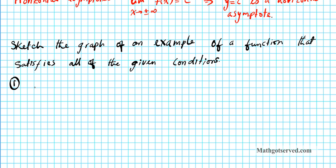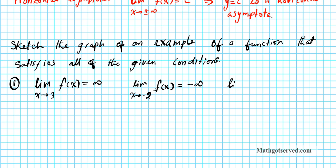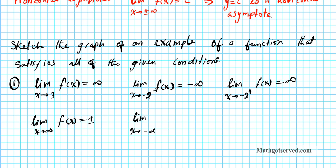For number one we have the following limits: the limit as x approaches 3 of the function equals infinity; the limit as x approaches negative 2 from the left equals negative infinity; the limit as x approaches negative 2 from the right equals infinity; the limit as x approaches infinity equals 1; the limit as x approaches negative infinity equals negative 1; and f of 0 equals 1.